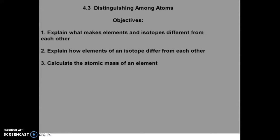Hello, chemistry students. The final section of this chapter, section 4-3, is distinguishing among atoms. We're going to learn about isotopes, what an isotope is, and we're going to talk about how isotopes of the same element are different from each other and how they are the same.